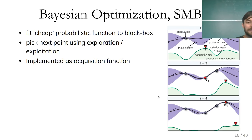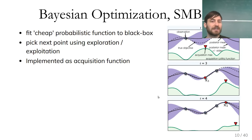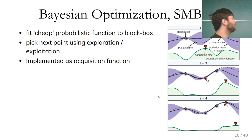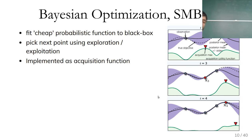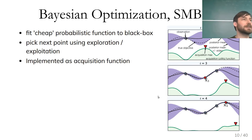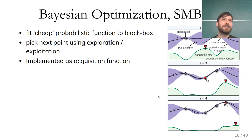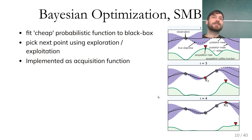There's another method commonly used called Bayesian optimization, also called SMBO — Sequential Model-Based Optimization. The main idea is that we fit a cheap probabilistic function as a surrogate for our black-box function. Instead of trying to optimize F directly (e.g., training a neural network for a week), we build a surrogate that predicts, given parameter settings, how well the model will perform.